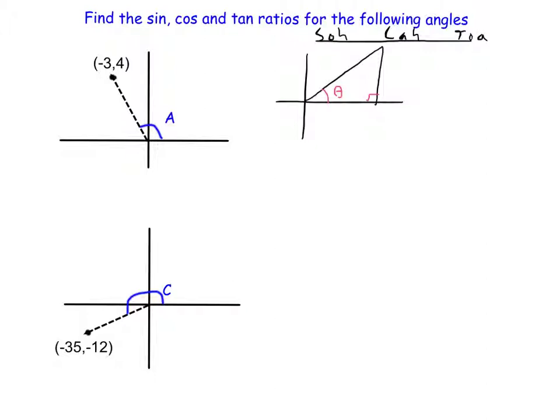So just start by putting a right triangle inside the standard position, and remember that this is the opposite. Down here we have the adjacent, and here we have the hypotenuse, and now I need to look at these in terms of X and Y. So here's that terminal point XY, and notice that your opposite is going to be Y, your adjacent is X.